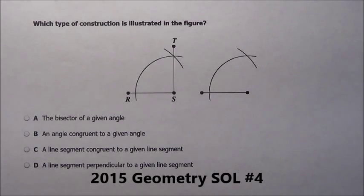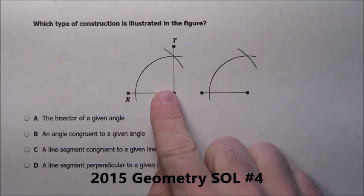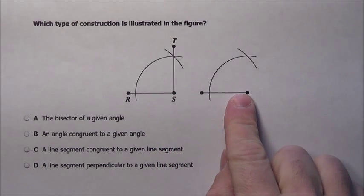Here's problem four. It says which type of construction is illustrated in the figure. So here's what they did and then they have this part here too.